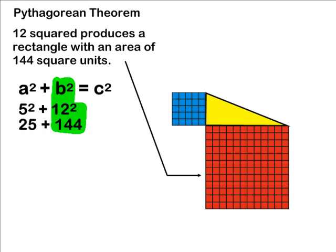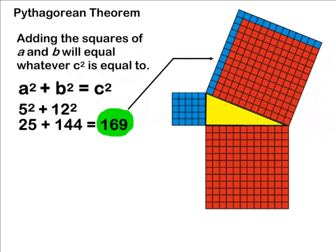By squaring side b, or 12 to the second power, that would produce a square with an area of 144 square units. When taking the area of these two squares that we produce and adding them together, we would get a total of 169, which by the way is equal to c to the second power.